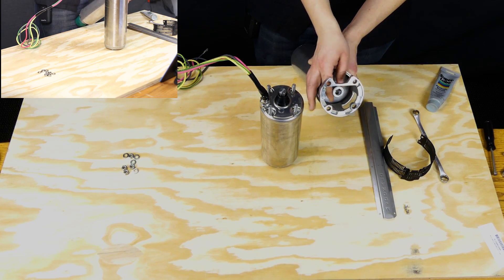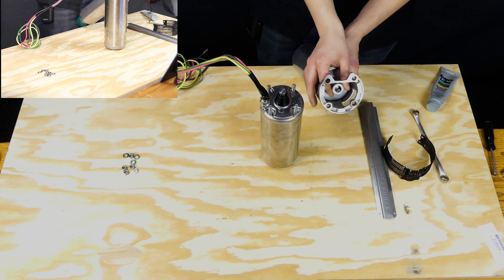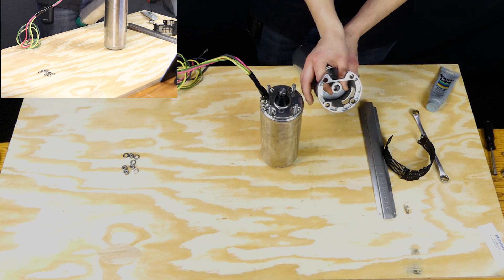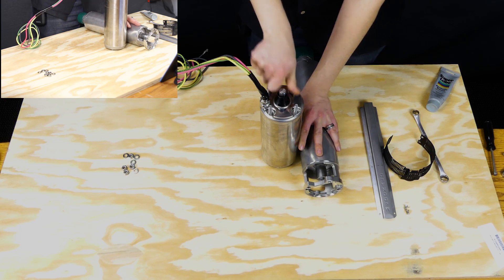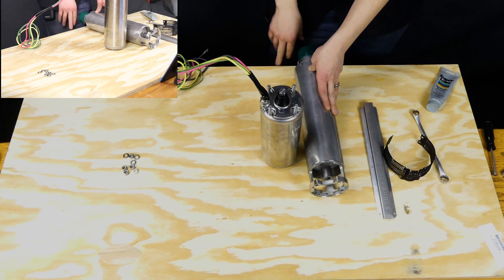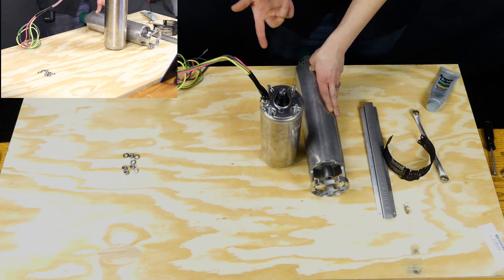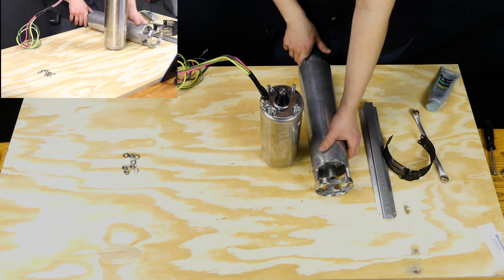You want to make sure that you rotate by hand the impellers on the pump side and the shaft on the motor side. What you're doing by rotating both of those is ensuring that you don't have any problems right out of the box.